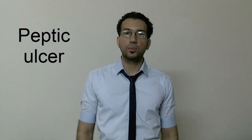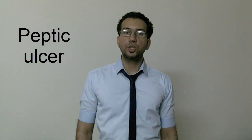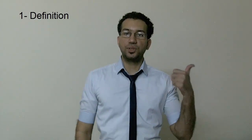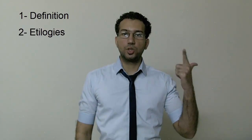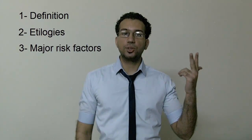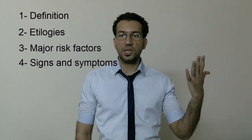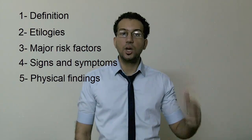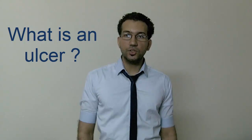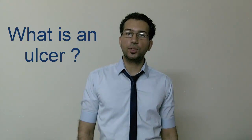Hello everybody, today we'll be talking about peptic ulcer. We'll talk about five things: definition, etiologies, major risk factors, signs and symptoms, and physical findings. First of all, what is an ulcer? An ulcer is an area of tissue erosion.